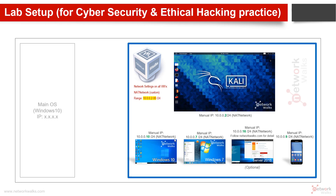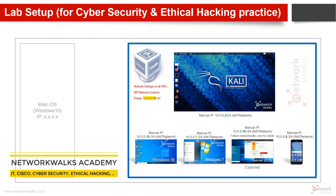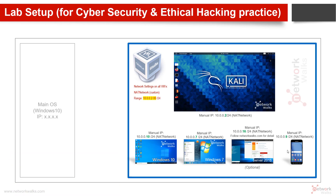The version I always recommend is version 6.1 — that is more stable. Inside VirtualBox, you will configure these settings. Next, you need a Kali Linux machine with the IP address 10.0.0.2, set up as NAT network — this will be our attacker machine. Then we need a Windows 10 victim machine, a Windows 7 virtual machine, a Windows Server 2016, and most importantly an Android virtual machine so you can practice how attacks happen on mobile devices and how to defend them.